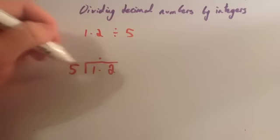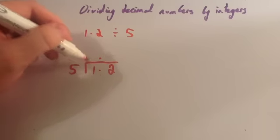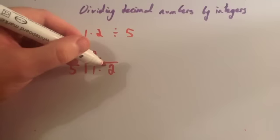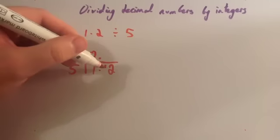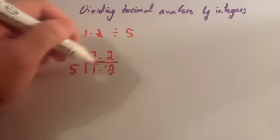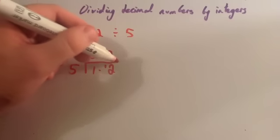How many 5s go into 1? No 5s go into 1. The 1 is the remainder. How many 5s go into 12? 2 5s go into 12. 2 5s are 10, remainder 2.